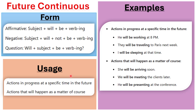For actions as a matter of course: 'She will be arriving soon' — for example, my sister said she's in the taxi now, so she will be arriving soon as a natural consequence. 'We will be meeting the clients later' — because we must meet the clients. 'We will be presenting at the conference' — we've already prepared the PowerPoint and everything, so it's a matter of course that we will be presenting at the conference.